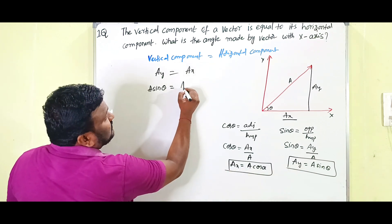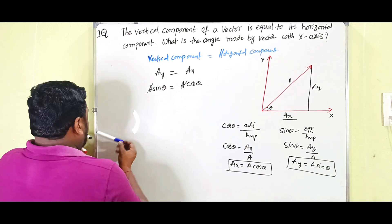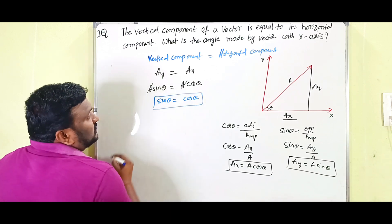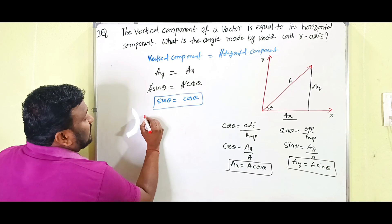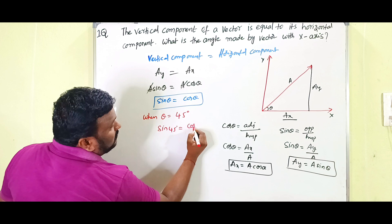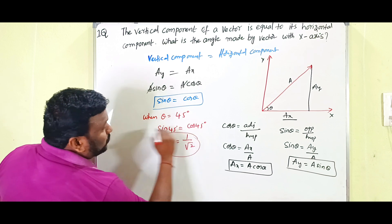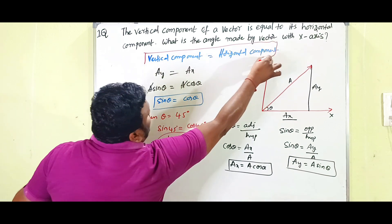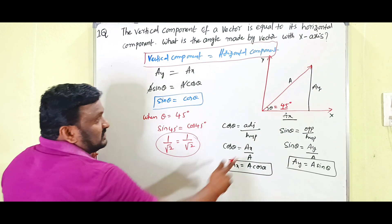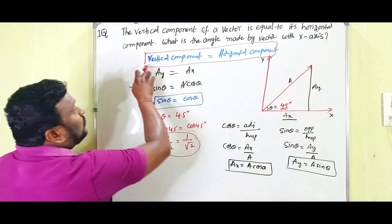The vertical component is A sine theta and the horizontal component is A cos theta. Substituting, A cancels and we get sine theta equals cos theta. This is true when theta equals 45 degrees, because sine 45° equals cos 45° equals one by root two. Therefore, theta equals 45 degrees.